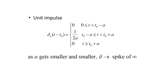If you think about the graph of this function, it's a straight line at 0, and then in between t naught minus a and t naught plus a, it jumps up to a plateau of value 1 over 2a, and then it jumps back down to 0.